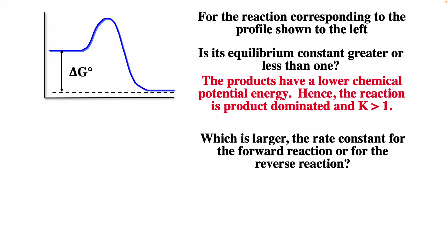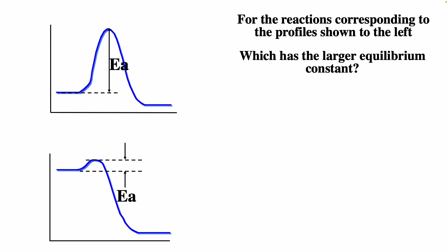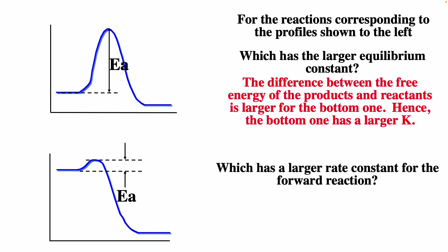Which is larger — the rate constant of the forward reaction or the reverse? For the forward reaction, this is the activation energy; for the reverse, this is the activation energy. The forward reaction has a smaller activation energy, so it should have a larger rate constant. Forward reactions correspond to the profile on the left, which has a larger equilibrium constant. The bigger the difference in energy between products and reactants, the bigger the equilibrium constant.